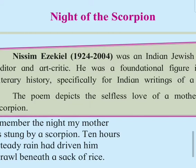The poem Night of the Scorpion by Nissim Ezekiel revolves around the incident of the poet's mother being stung by a scorpion on a rainy night. The poem follows a narrative style where an incident is narrated in a free verse format, having no fixed rhyme scheme.